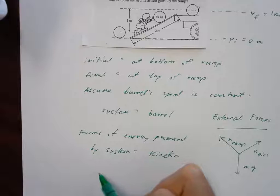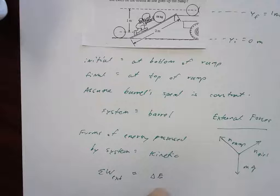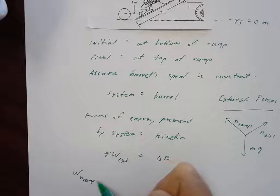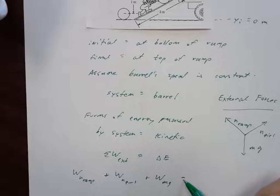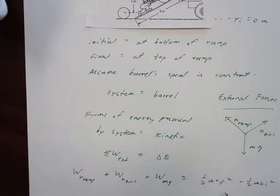To solve the problem, we're always going to start with the work-energy principle, which says that the net work by all the external forces on any system has to be equal to the change in energy. In this problem, to find the net work, we have three forces: the work by N ramp, plus the work by N of the girl, plus the work by mg. On the right side, the change in energy means final kinetic energy minus initial kinetic energy, and that's going to be zero since we assume constant speed — so those two terms cancel out.